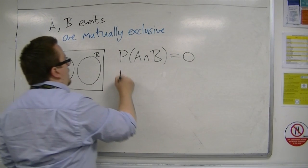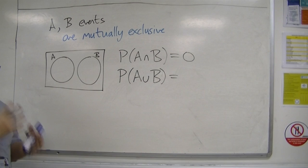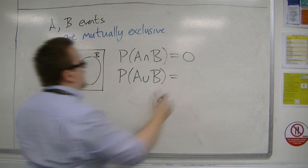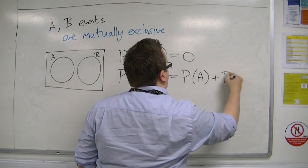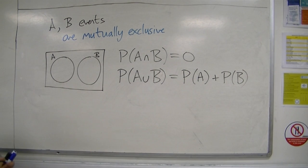And, if you are looking at A union B, well, that is just the probability of A plus the probability of B because there is no intersection to subtract. There is no overlap.